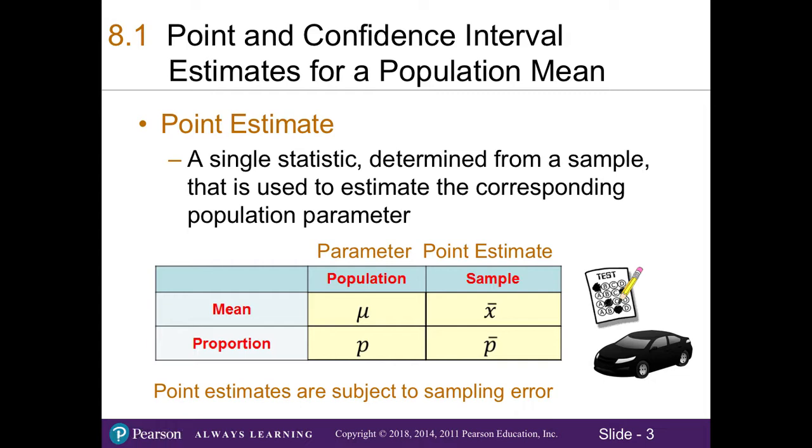For example, if I wanted to estimate the class average on exam 2, I can sample 5 students' exam 2 grades and get a sample mean, or x-bar. In addition, if I wanted to study the population of oceanside drivers, I could obtain a sample of 100 people and have found that 42 of them lease their cars. Thus, the point estimate here would be the sample proportion, or p-bar.